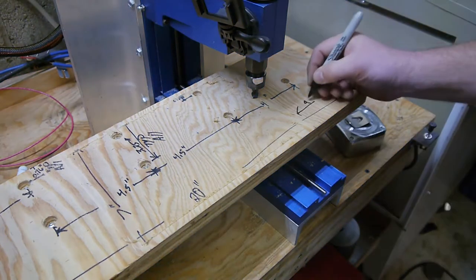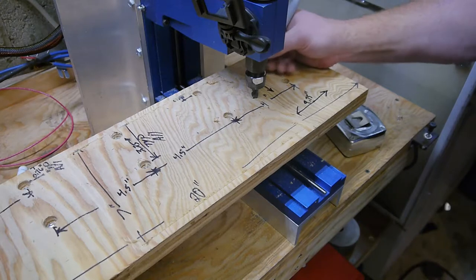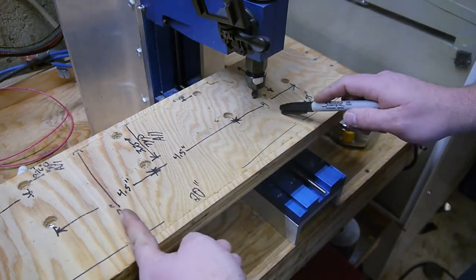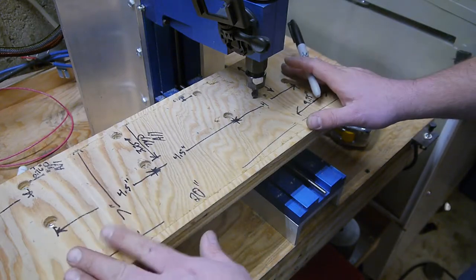Write that down. 6.25 this way. 9.75 this way is what the work surface I'm going to be able to use.